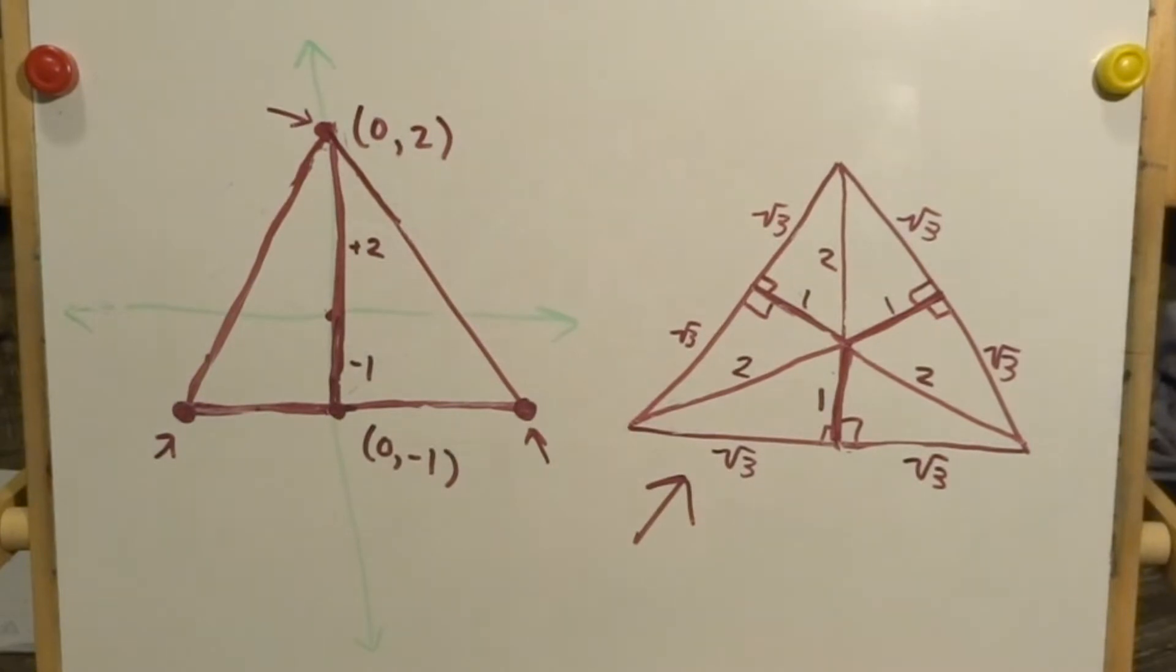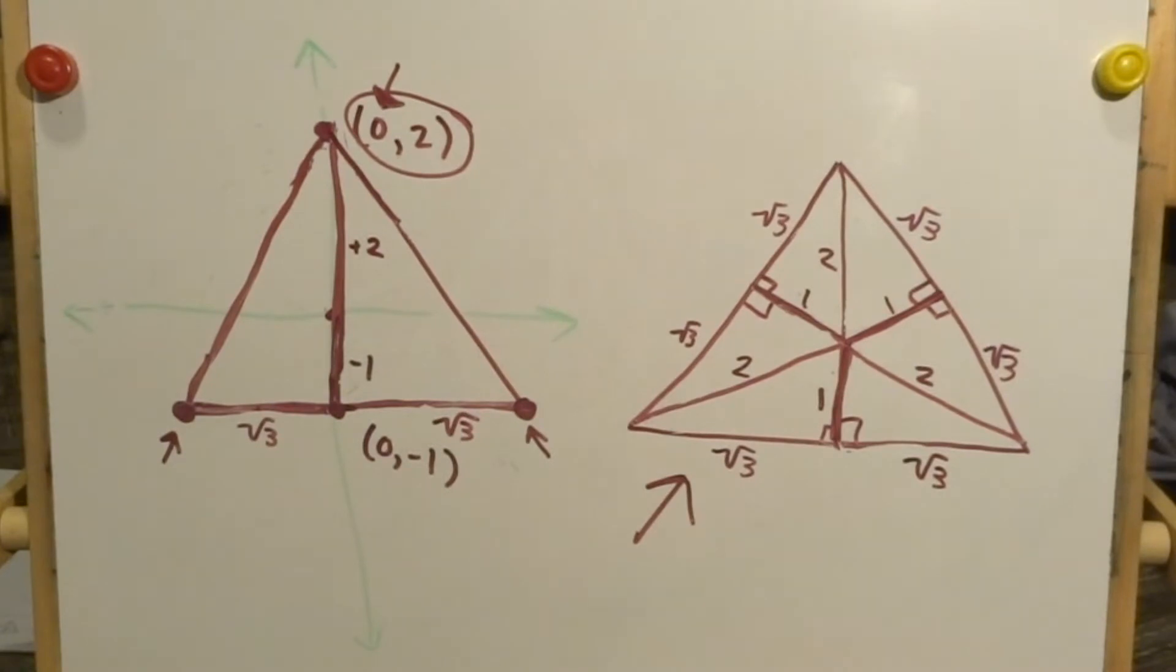Now, we just have to find the x-coordinate of these three points. This top one is on the y-axis, so its x-coordinate is zero. And these two, you can see from the triangle measurements we found earlier, that they are both root three away from the y-axis.